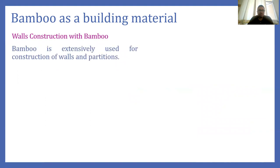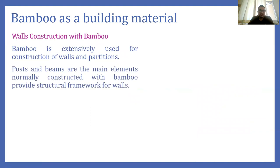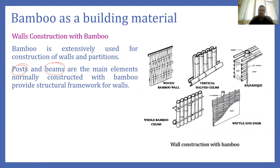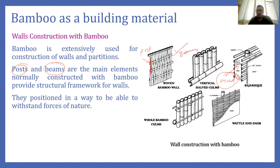Bamboo can also be used in wall construction for making walls and partition walls. We use bamboo in two manners — one in the form of beam and the second in the form of post. By this combination we can construct a bamboo wall. The vertical bamboo is known as the post and the horizontal bamboo is known as the beam. Sometimes, for more rigidity, we use infill such as mud within the wall. They are positioned so that they can withstand the horizontal force of nature.